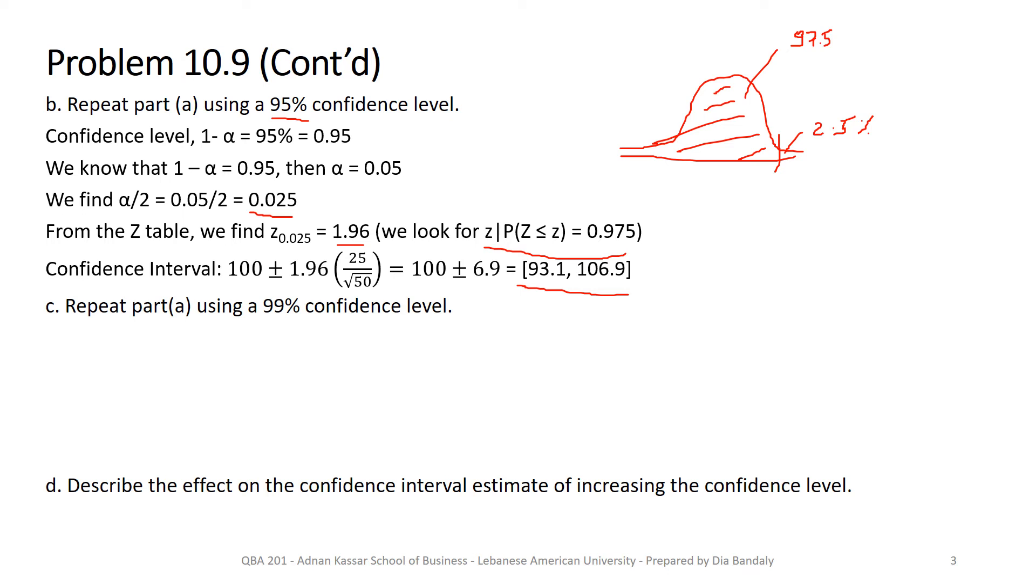Part C: we need to find the confidence interval with 99% confidence level. 99% confidence level means that now alpha is 1%, so alpha over 2 is 0.5%, which is 0.005.